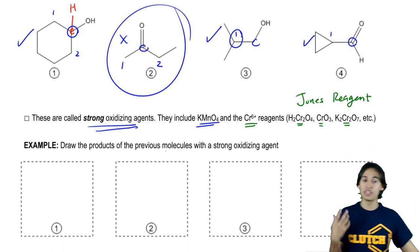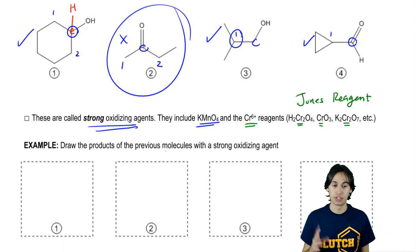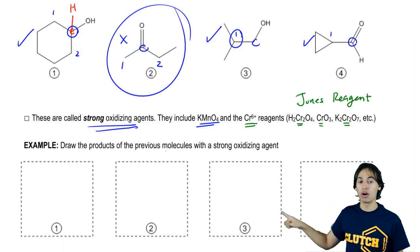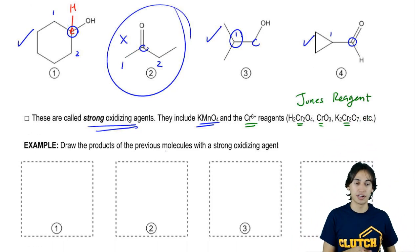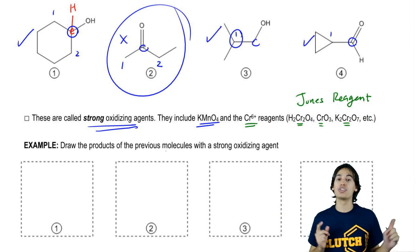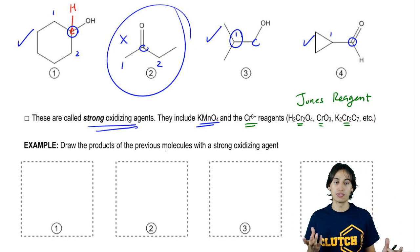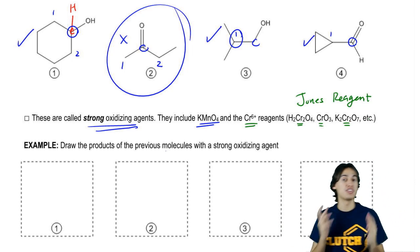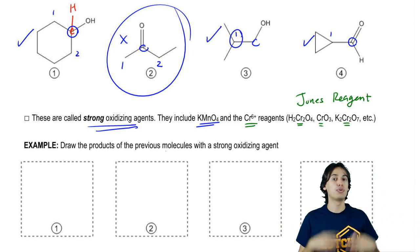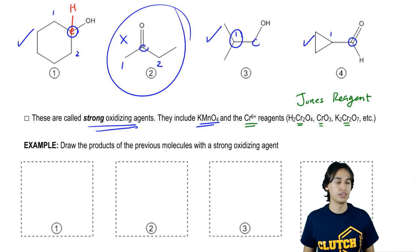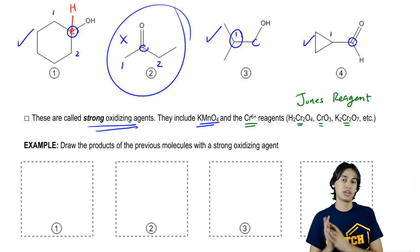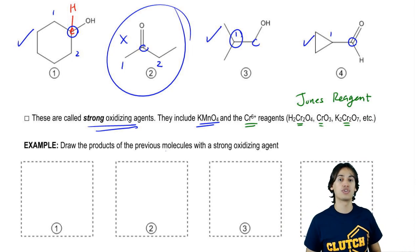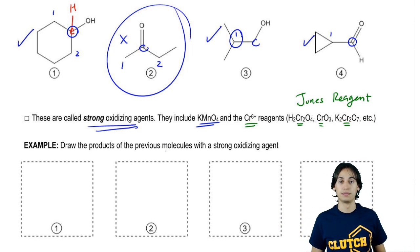So what I want you guys to do for this next practice problem is go ahead and draw the new oxidation products of each of these molecules. I want four different things in these boxes. If it's not going to react, put no reaction. I want to see all the different oxidation products, so go ahead and try to do the first one.